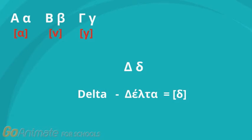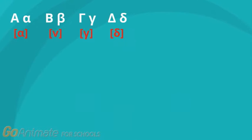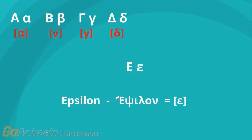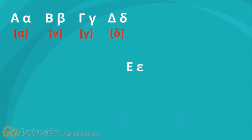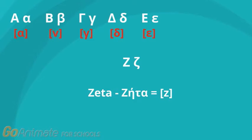Delta is read as th, as in this. Delta, th. Epsilon is read as E, as in pet. Epsilon, E. Zita is read as Z, as in zone. Zita, Z.